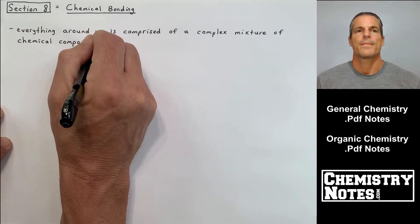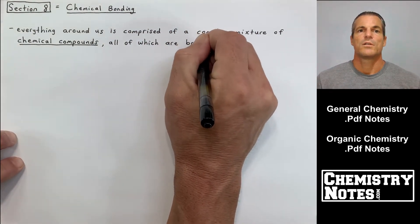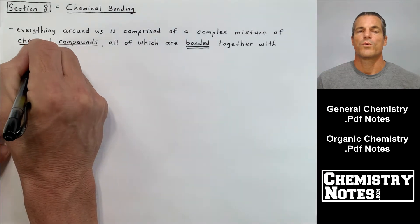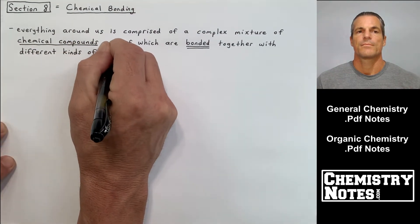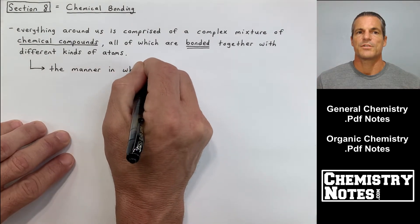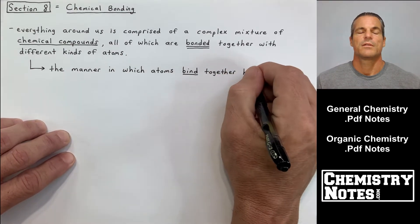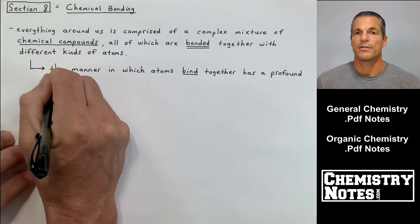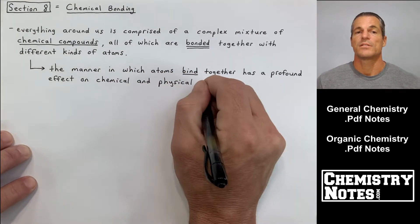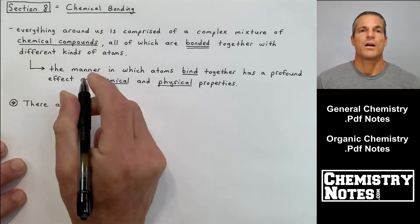Section 8 is called chemical bonding. Everything around us is comprised of a complex mixture of chemical compounds, all of which are bonded together with different kinds of atoms. The manner in which atoms bind together has a profound effect on that particular chemical compound's chemical and physical properties.